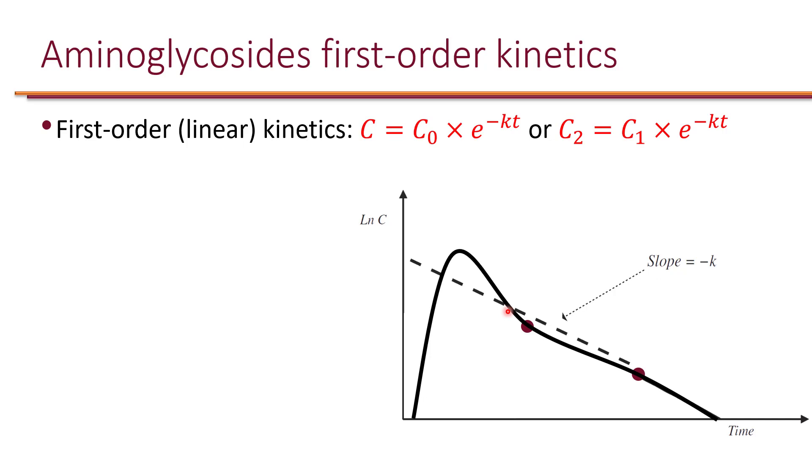This is known as the distribution phase. Once the distribution phase is over, meaning that all tissue is filled with the drug, then the levels drop at a slower rate because it is now only due to clearance by the kidneys. It's during this phase that we would like to get levels to calculate the slope of the line, which would give us the elimination constant or negative k.